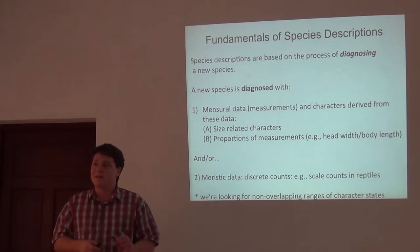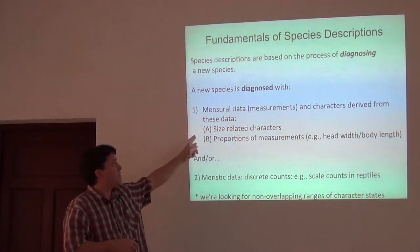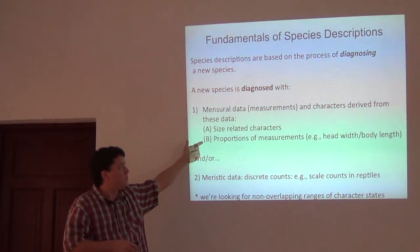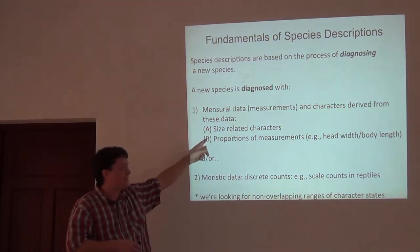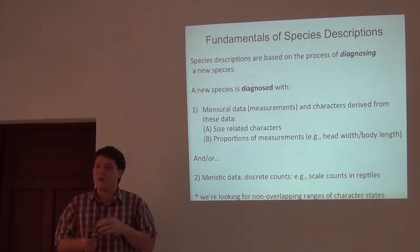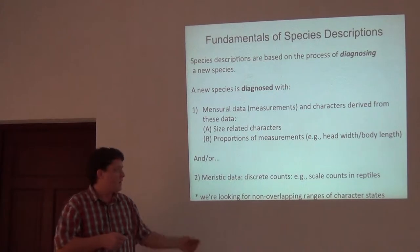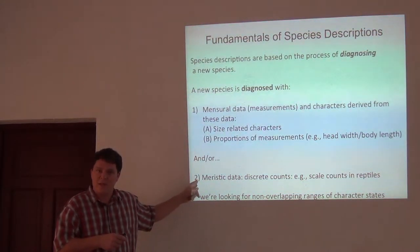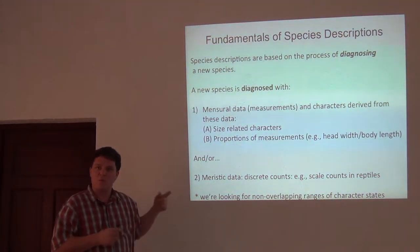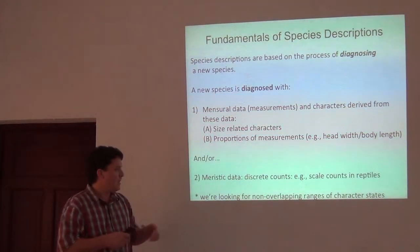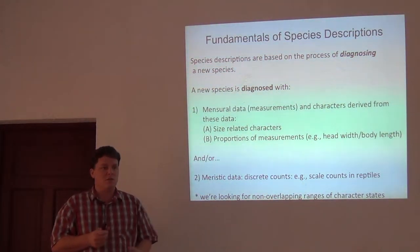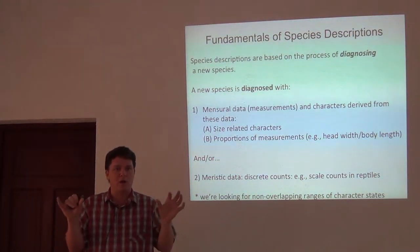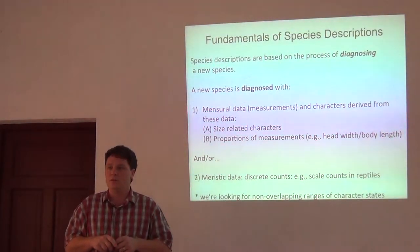I want to talk about the kinds of data in amphibians and reptile systematics. You can diagnose taxa with mensural data, which are measurements. These data can be transformed, or you can diagnose taxa with derivations such as size-related characters or proportions like ratios of head width to body width. Today I want to talk about meristic data, which are discrete characters and scale counts in the case of reptiles. In terms of diagnosing something, we're looking for non-overlapping ranges of character states, because if you can show that taxon A doesn't overlap with taxon B with respect to a couple characters, then your new species is what we call diagnosable.